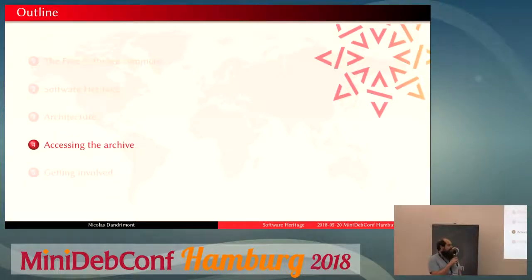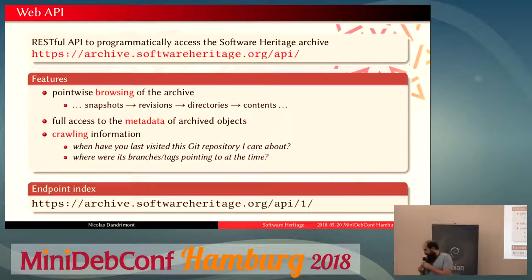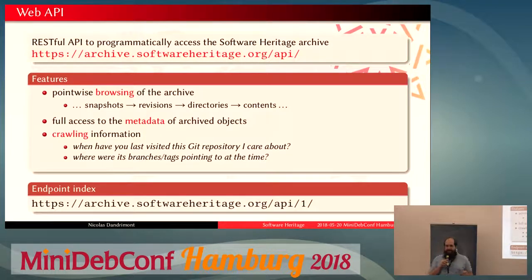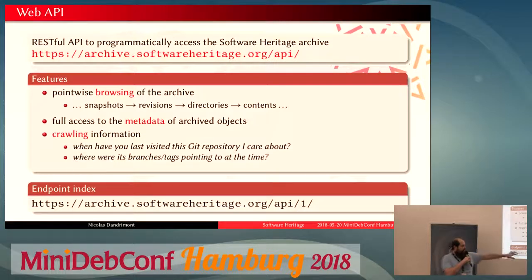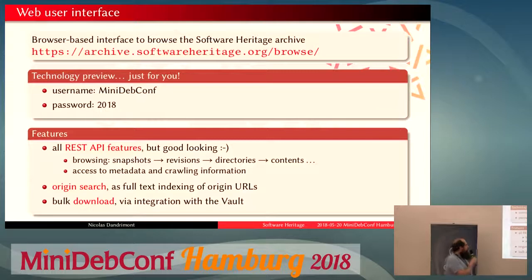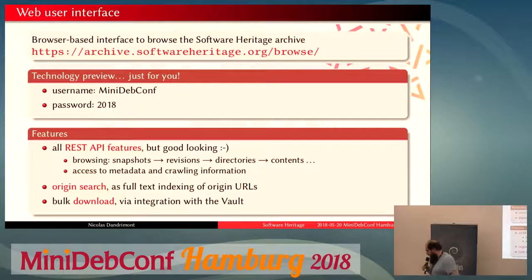So how do we actually look into the archive? One of the ways you can browse and use the archive is using a REST API. This API allows you to do pointwise browsing of the archive — you can follow the links in the graph, which is very slow but gives you pretty much full access to the data. There's an index for the API you can look at, but that's not really convenient, so we also have a web user interface. It's in preview right now — we're going to do a full launch in the month of June. If you go to archive.softwareheritage.org/browse with the given credentials you can have a look and see what's going on.